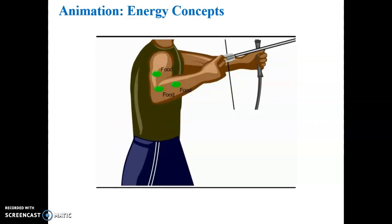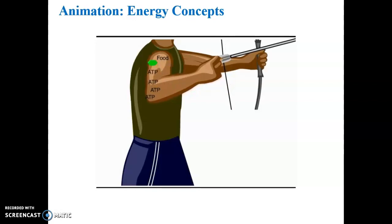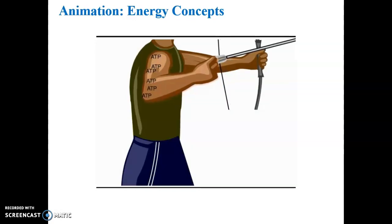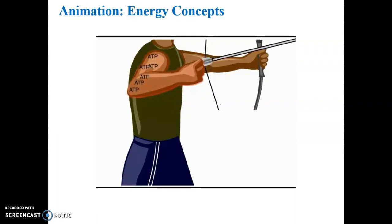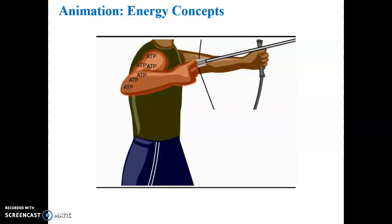Where do our muscles get energy to perform work, such as pulling back a bowstring? Our bodies use chemical energy from food. Chemical energy is a form of potential energy. When your body breaks down food molecules, the stored potential energy can be converted to kinetic energy through cellular respiration, using oxygen. Cellular respiration converts chemical energy from food to ATP; water and carbon dioxide are byproducts.